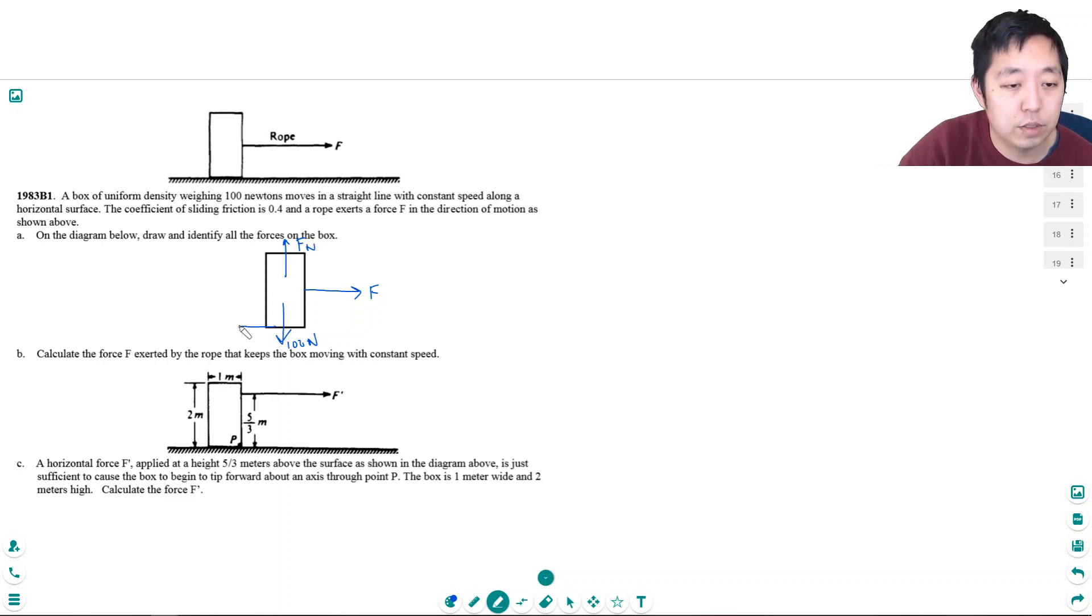Calculate the force F exerted by the rope that keeps the box moving with constant speed. So if it's no acceleration, right? What does no acceleration mean? That means the net force equals zero, because F_net has to equal ma. If a equals zero, then all of this equals zero.